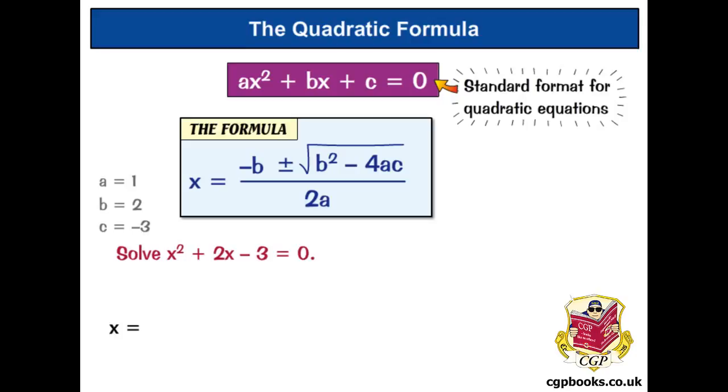OK, now off we go. x equals minus b, minus 2, plus or minus the square root of b squared. So, that's 2 squared, minus 4ac. OK, so it's 4 times a, which is 1, times c, which is minus 3. And it's all over 2a, which is 2 times 1.